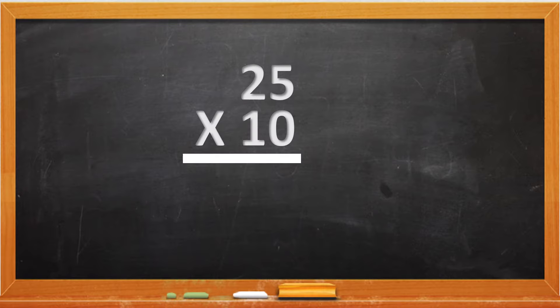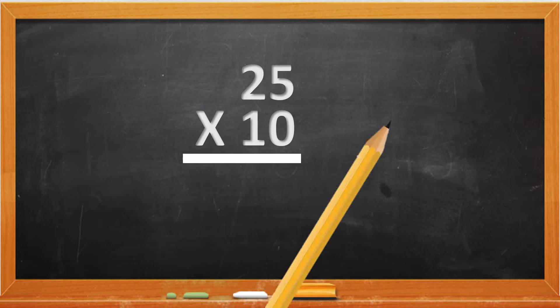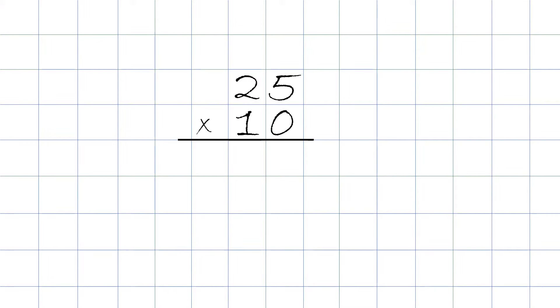Today we have 25 times 10. The problem is written on the blackboard. If you want to excel in math, I highly recommend that you get a sharp pencil and do your math problems on graph paper. So here on this graph paper we wrote 25 times 10, and let's get down to it to learn how we do the system.